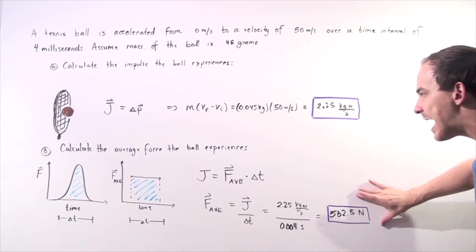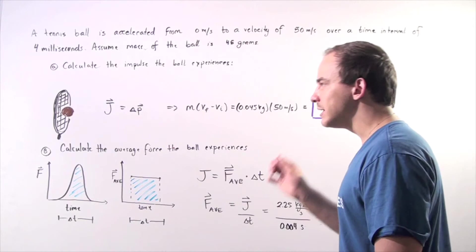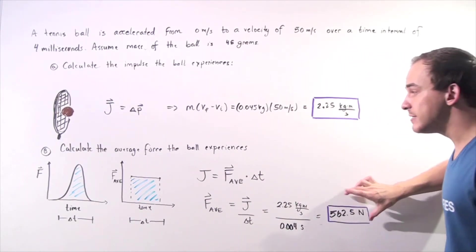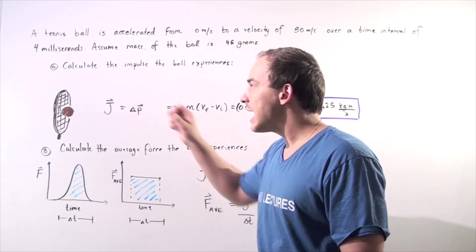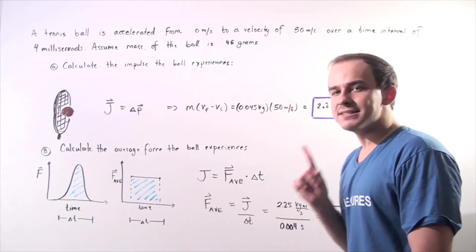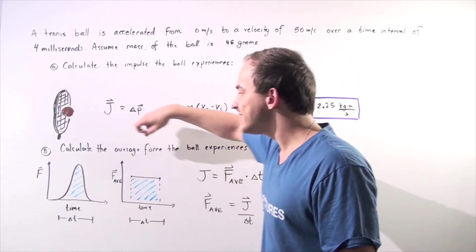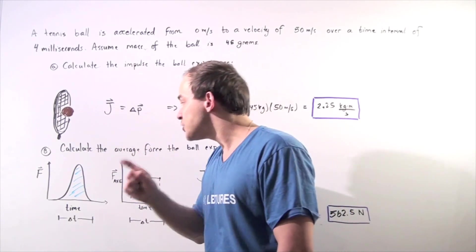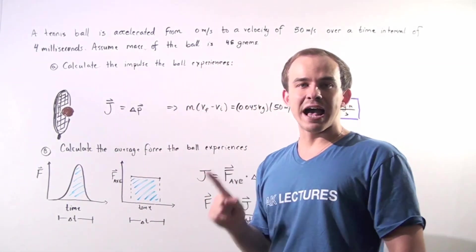This is the average force our object experiences during the collision. Note: this is not a constant force. The actual force the tennis ball and the racket experience varies — at any given point it's given by the curve. What we actually found is the average force, which is a constant value.